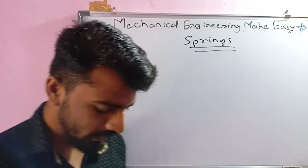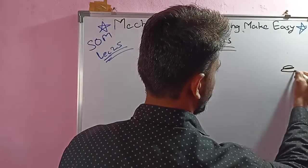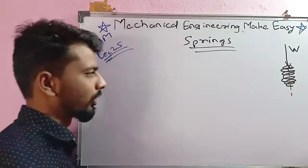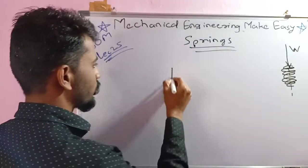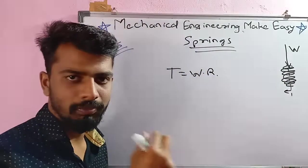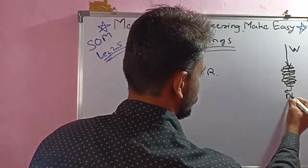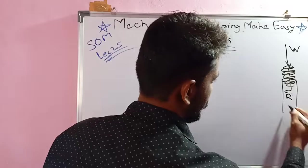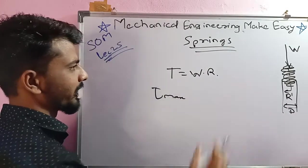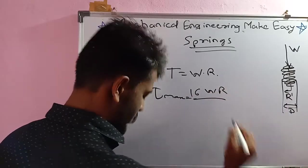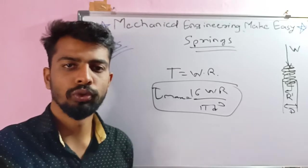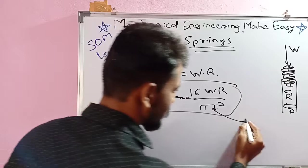For a closed coil helical spring subjected to axial load W: the torsion T = W × R, where W is the axial load and R is the radius of the spring (capital R = D/2, where D is the coil diameter). The maximum shear stress equals 16WR divided by π d³, where d is the wire diameter. This is an important formula.